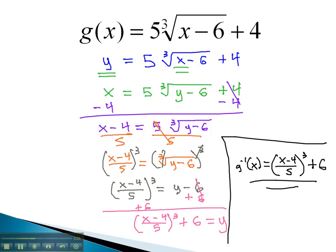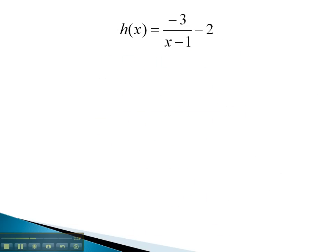Let's take a look at another example, where we're asked to find the inverse of a function. Here, the h of x is representing our y equals negative 3 over x minus 1, minus 2. We can then switch any x's and y's, giving us x equals negative 3 over y minus 1, minus 2, and start solving for y.